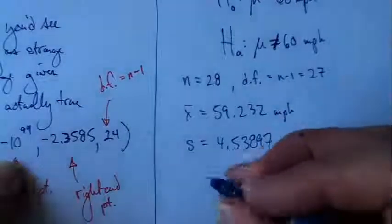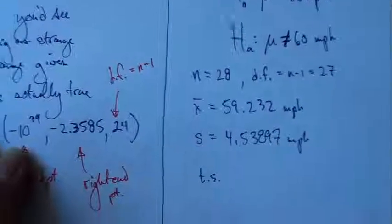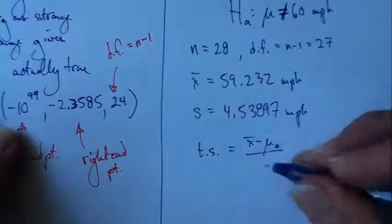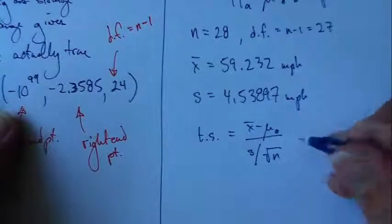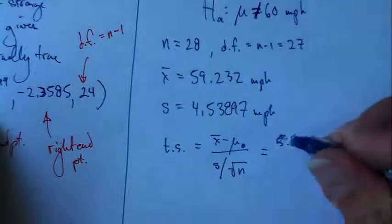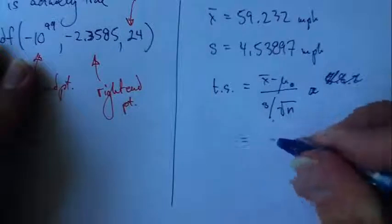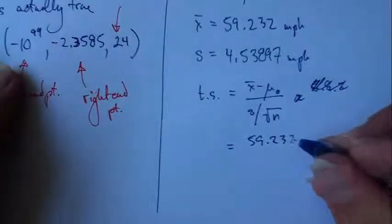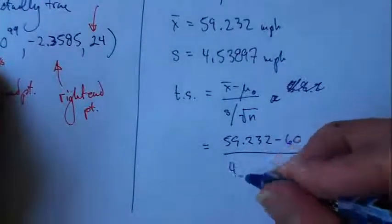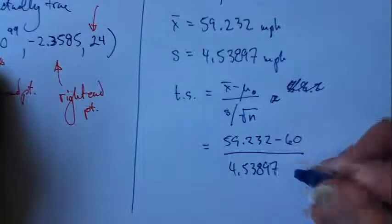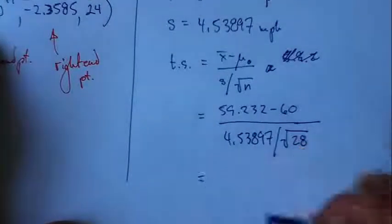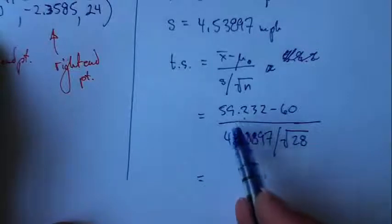Now, what's our test statistic? Okay. It's going to be, again, it's x-bar minus mu-naught over s over square root of n. Okay. 59.2, oops, screwed that up. Okay. Start over. Try that again. 59.232 minus 60 all over 4.53897 over the square root of, What was my sample size? 28. Okay. By the way, you can tell that our sample mean is less than 60, right?